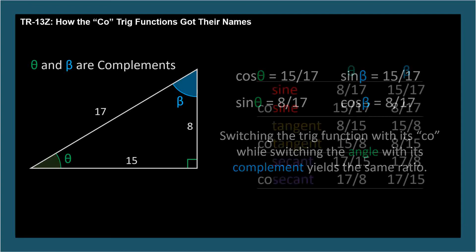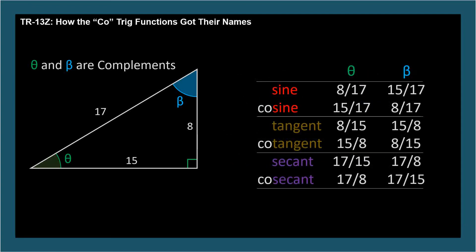Here's one last chart to show all these relationships. The cosine equals the complement's sine, and the sine equals the complement's cosine. The cotangent equals the complement's tangent, and the tangent equals the complement's cotangent. And the cosecant equals the complement's secant, and the secant equals the complement's cosecant.